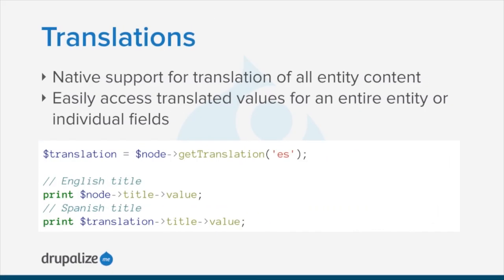Translation and localization is supported natively by the new EntityField API. And again, because everything is a field instead of the whole property versus field hassle, the system is much more consistent. Because entities are typed objects, there are also methods for easily accessing translated values for an entire entity, or even for an individual field.